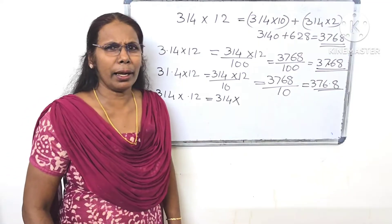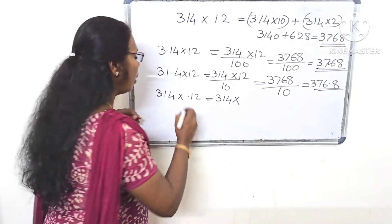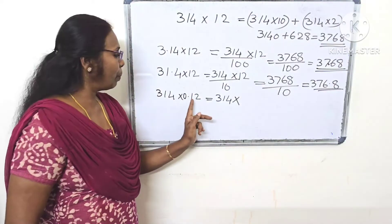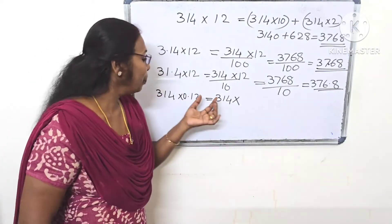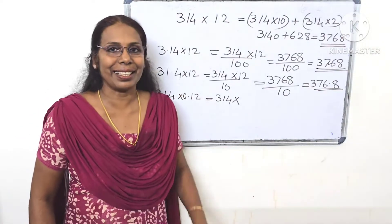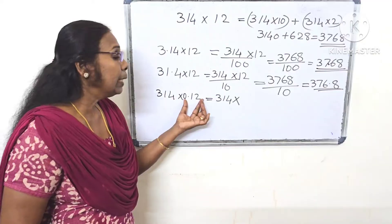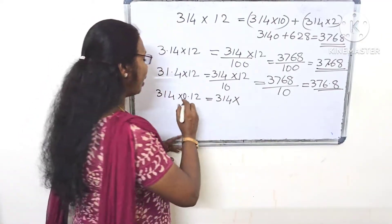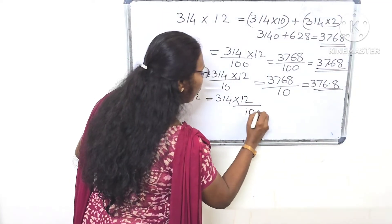If you say, you can see that there is no point. You can't see it. How many things are these? These are the two things. What do we do? We can't do this. 12 by 100.